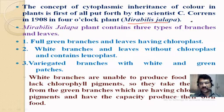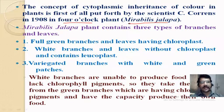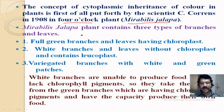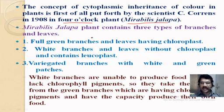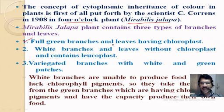This cytoplasmic inheritance of chloroplast was first discovered by the scientist Karl Correns in 1908, first observed in the four o'clock plant, Mirabilis jalapa. This plant contains three types of branches and leaves, unlike other plants which normally contain only one type.